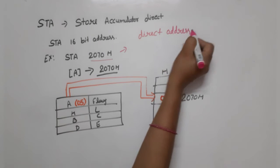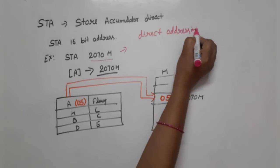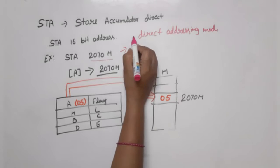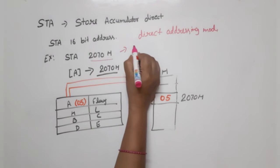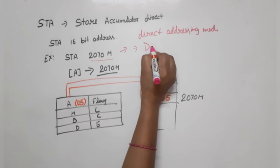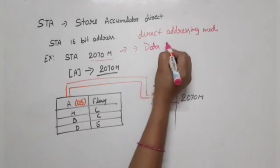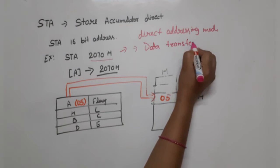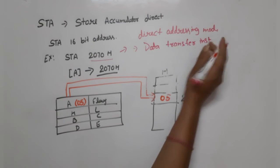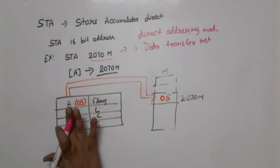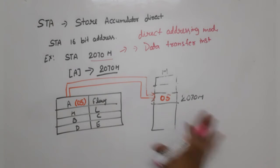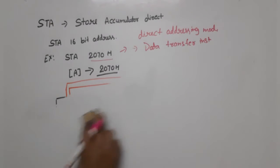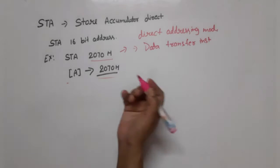The addressing mode is direct addressing mode. Now, what type of instruction is this? This is a data transfer instruction because data is being transferred from the accumulator to memory.